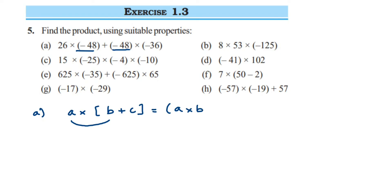We are going to use distributive property because it is like a into b plus c — when you open this bracket it will be a into b plus a into c. Comparing with the question, a which is minus 48 is present two times, and b and c will be the other two values, that is 26 and minus 36. Whenever you see the same number twice on both sides of a plus or minus sign, use distributive property.